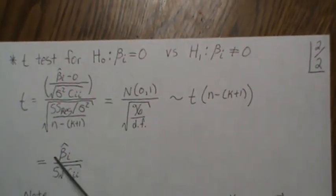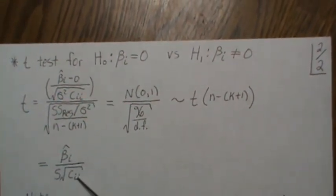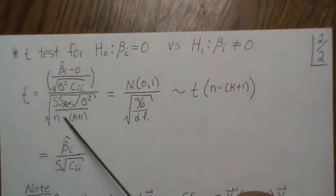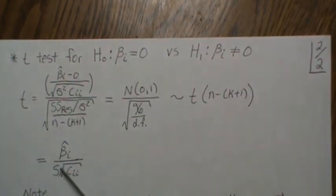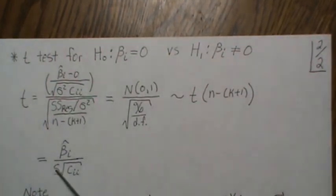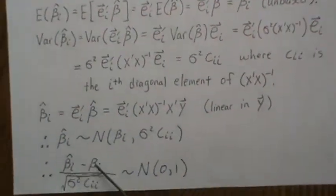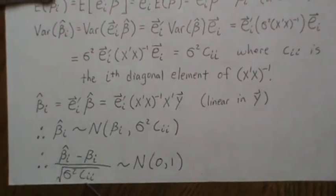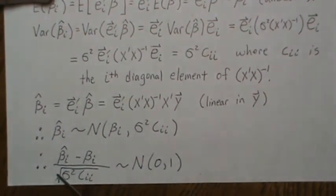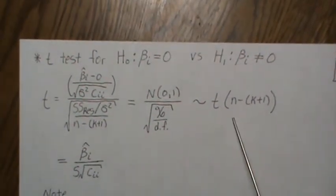This simplifies to beta_i hat, and then the square root of c_ii is here. The sigma squared cancels. This is an estimate for sigma squared - let's call it s squared. Square root of s squared is s. If we go back and look at this, it looks like we're just replacing an unbiased estimate for that variance. Remember this piece is zero, so we have beta_i hat over - sigma squared c_ii can come out. If we replace that sigma with s, it magically turns it to a t-distribution.